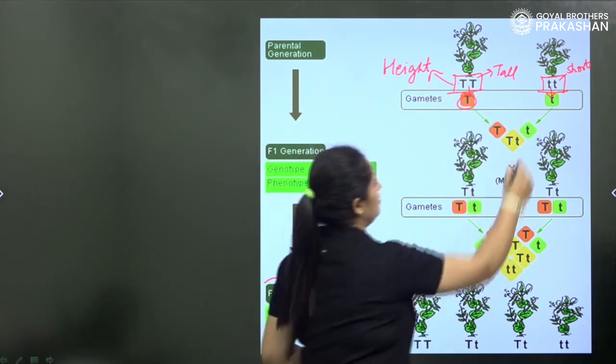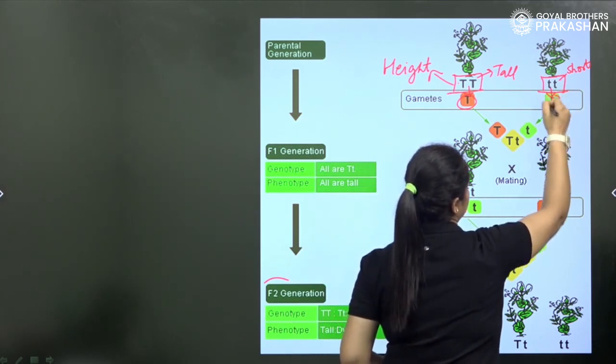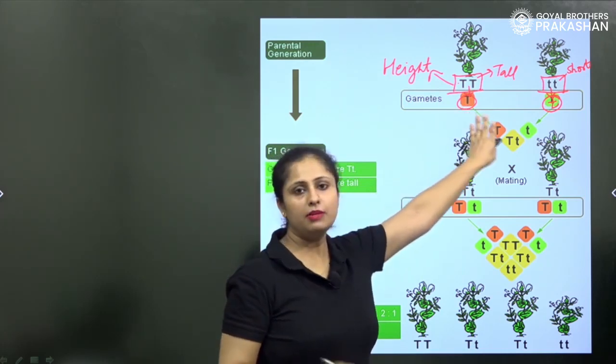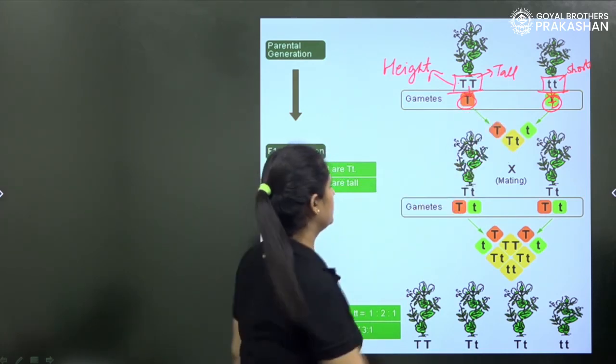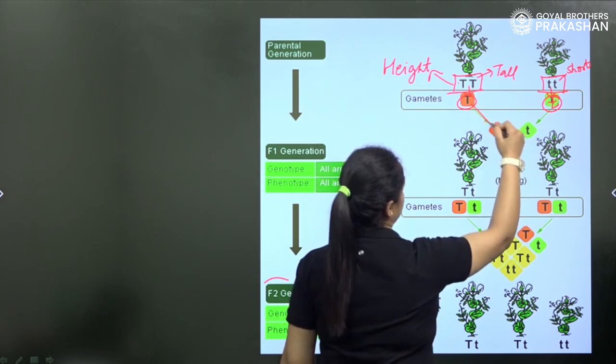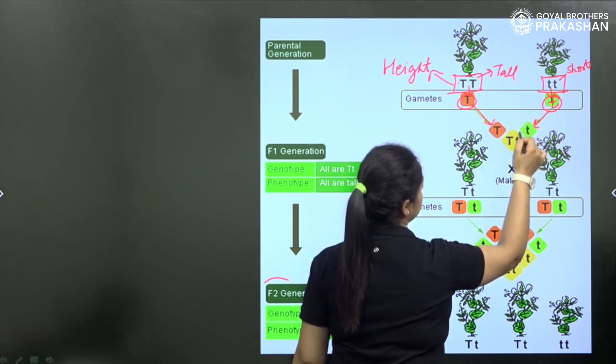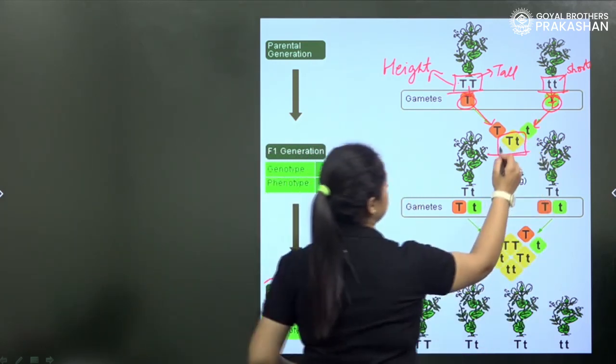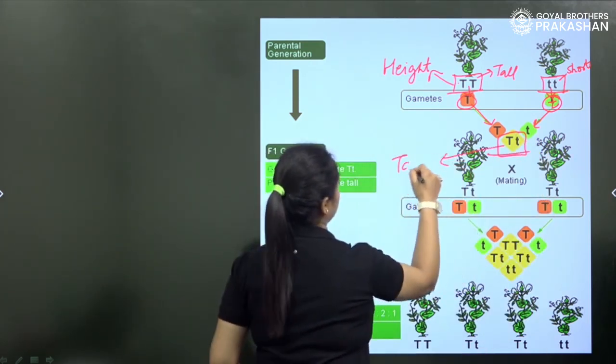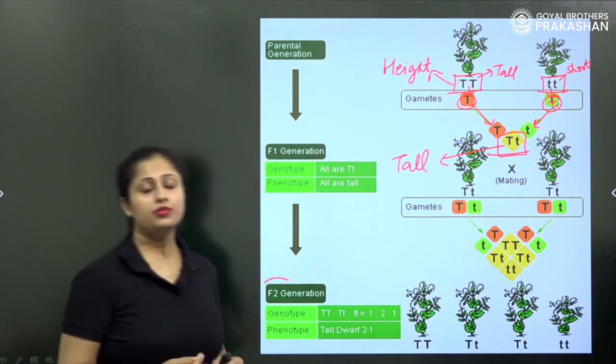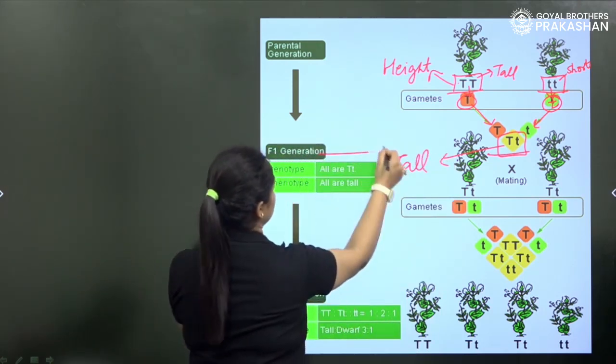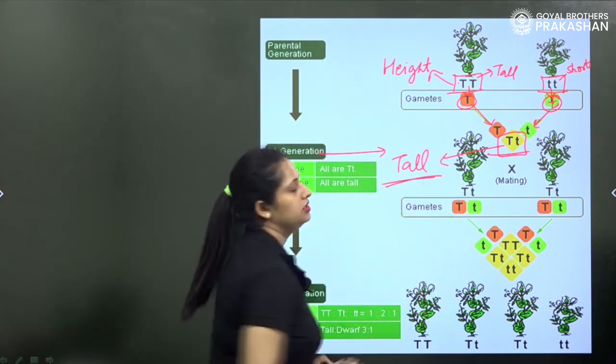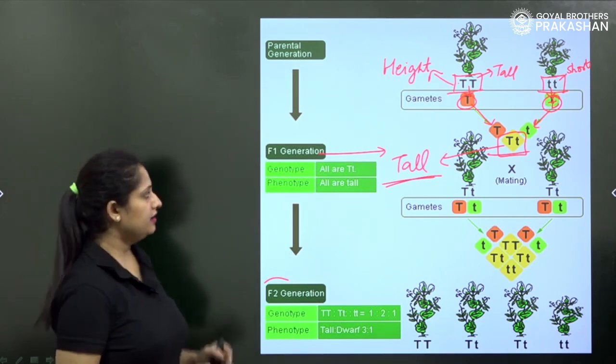Gametes are segregated before fusion. From these two T or two alleles, one T is segregated. This is the small t which is recessive and dominant characters are denoted by capital letters. This T combines with this t. Then a cross is made. He saw that Tt, that is tall varieties are produced.